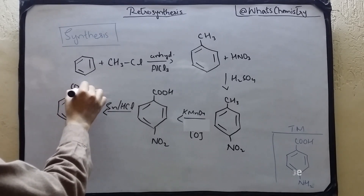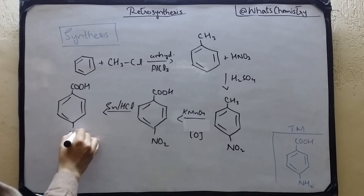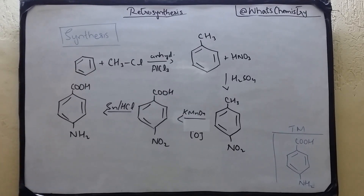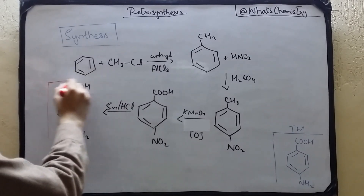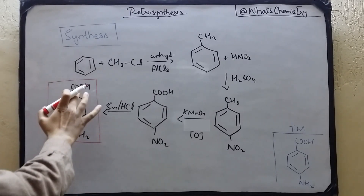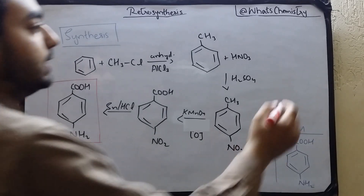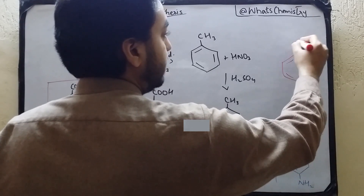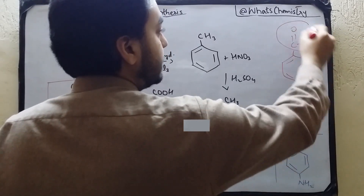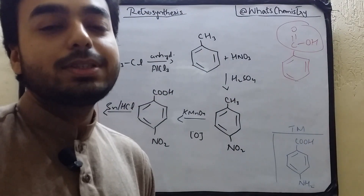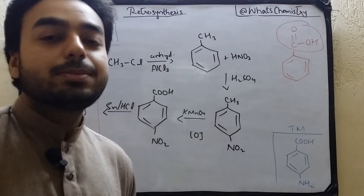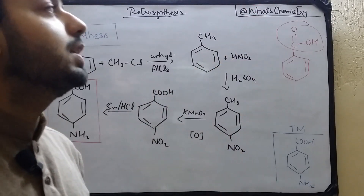After reduction we have COOH and the amino group — our target molecule, para-aminobenzoic acid, has been prepared. Note that COOH written as 'COH' in the diagram actually means C double bond O and OH. For more interesting chemistry lectures, subscribe to Wet's Chemistry on YouTube and press the bell icon. Thank you.